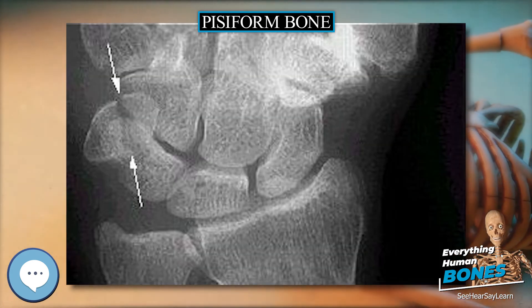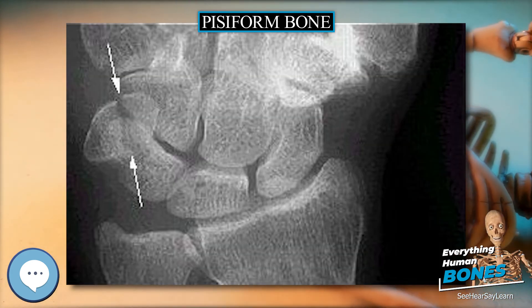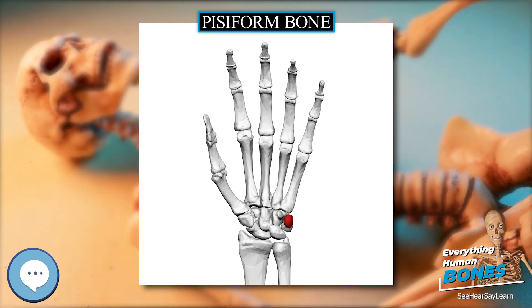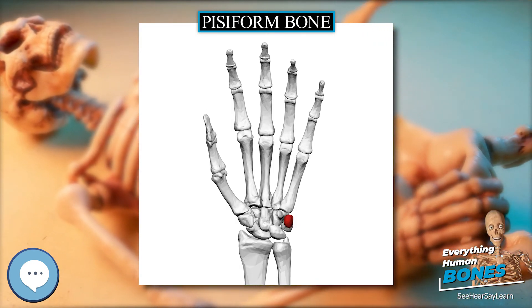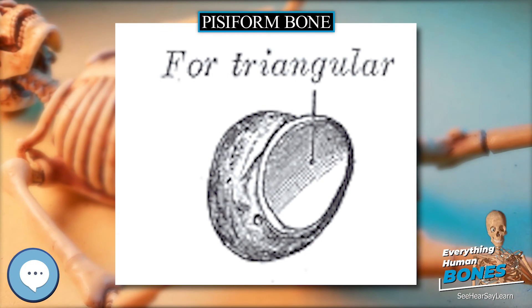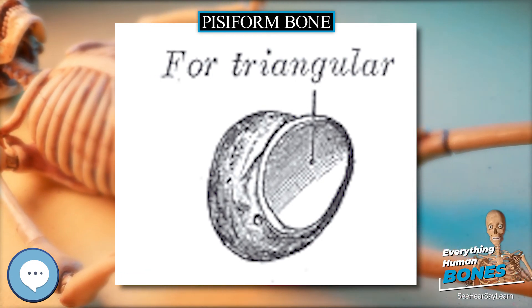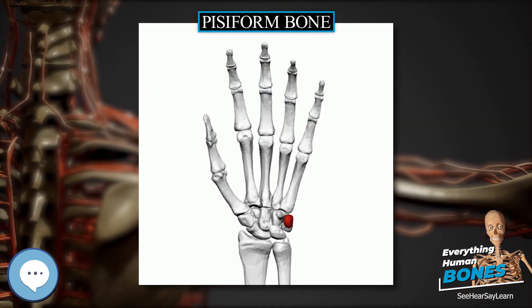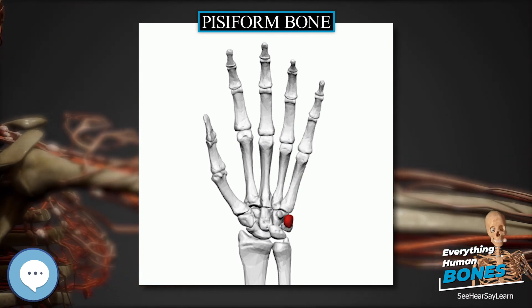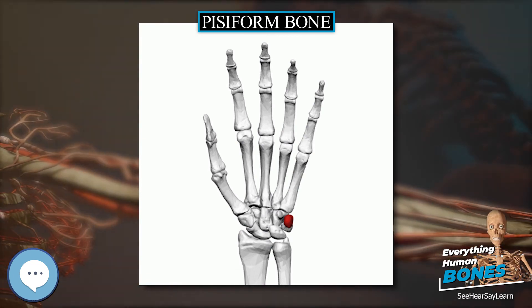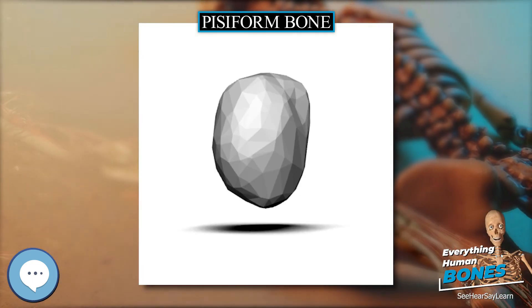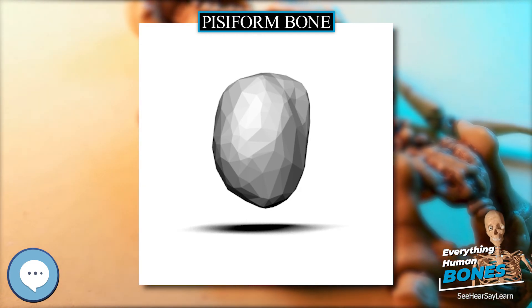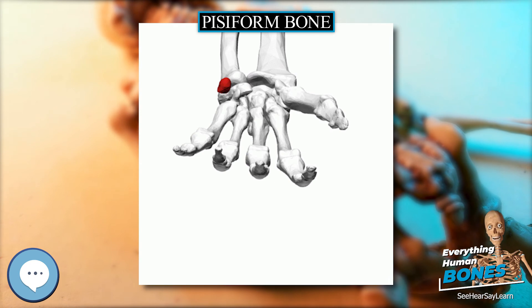Others suggest that the pisiform's link with Hox A11 and Hox D11 could tie its developmental history to that of the forearm, whose length is determined by Hox gene expression. Within this hypothesis, because modern forearm proportions are not seen until Homo erectus at 1.5 million years ago, it is possible that pisiform reduction would have also occurred around this time. Alternatively, the same group suggests that the reduction could be a reflection of independent selection associated with the production and use of stone tools, but changes in pisiform morphology have yet to be studied in relation to their effect on wrist function.